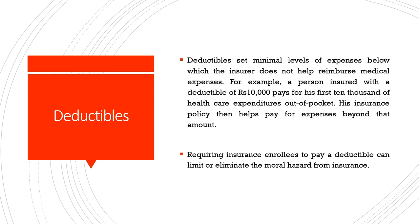The third instrument used for limiting moral hazard is deductibles — minimum levels of expenses below which the insurer does not help reimburse medical expenses. For example, a person insured with a deductible of rupees 10,000 pays for the first 10,000 of healthcare expenditures out of pocket, and then the insurance policy helps pay for expenses beyond that amount. This requires insurance enrollees to pay a deductible that can limit or eliminate the moral hazard from insurance.